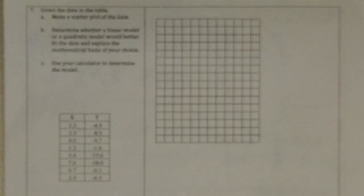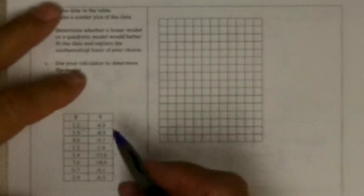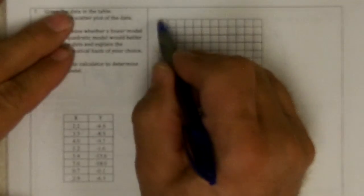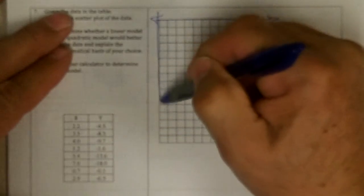Alright, and finally the last problem. So it says make a scatter plot and I see these are a lot of negative numbers and these are all positive. So I'm going to make my x-axis right at the top and my y-axis right on this edge.